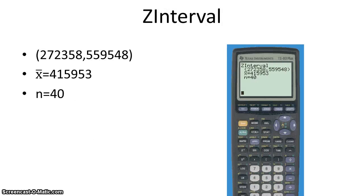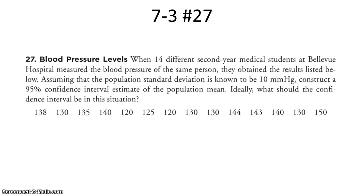Now let's look at another problem. When 14 different second-year medical students at Bellevue Hospital measured the blood pressure of the same person, they obtained the results listed below. Assuming the population standard deviation is known to be 10 millimeters of mercury, construct a 95% confidence interval estimate of the population mean. Notice they did not give descriptive statistics — just raw data. But since we know the population standard deviation, we can use the standard normal distribution for this confidence interval estimate.